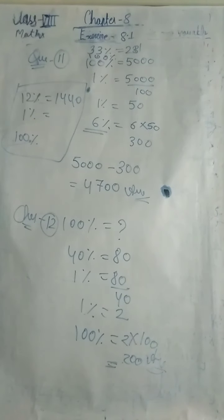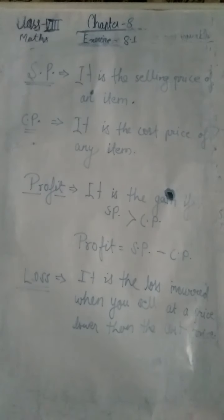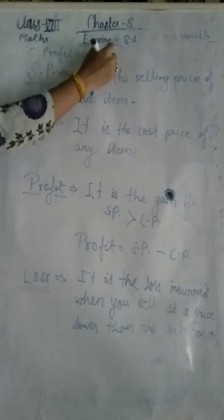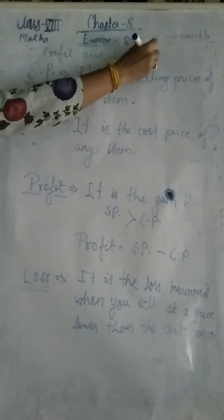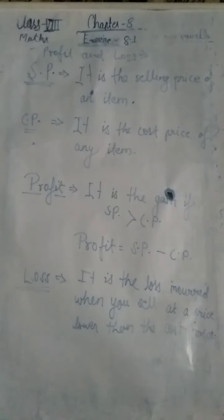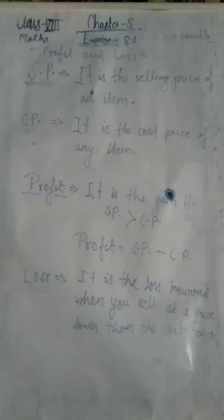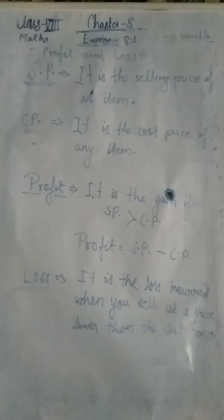Now some important terms related to profit and loss. SP stands for selling price — it is the selling price of an item. CP stands for cost price — it is the cost price of any item.